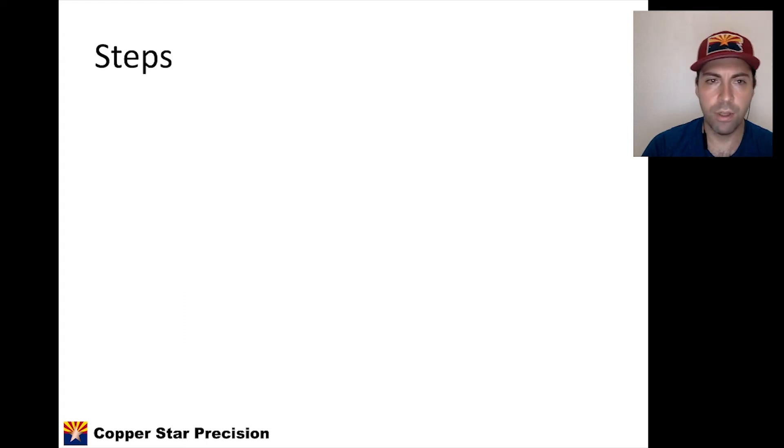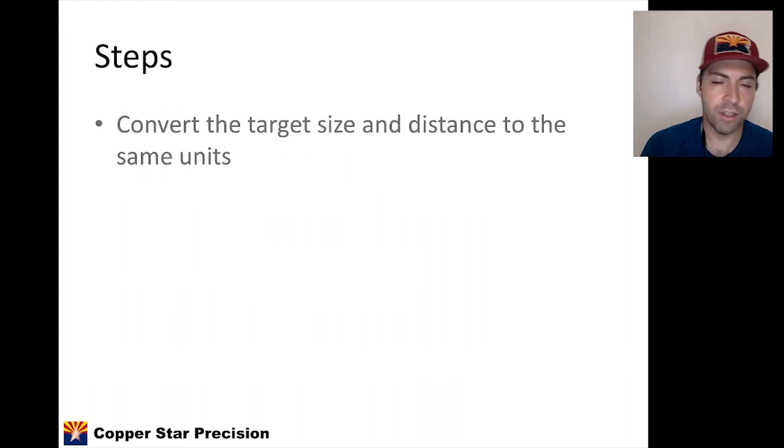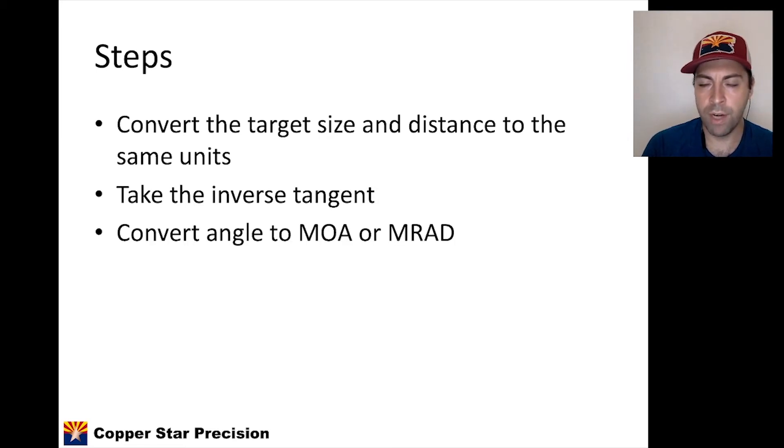Let's go over the steps. Convert the target size and distance to the same units. Step number one, everything has to be in the same units in terms of distances. So inches, yards, it has to be the same. We'll talk about how to do that. We're going to take the inverse tangent. That's a simple function that we can do in a calculator or a spreadsheet. We're going to convert that angle to MOA or milliradians, because remember they're different angular measurements. They're both angular measurements, but they're different in how they're calculated.